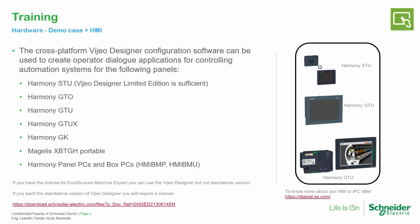You can use Vijeo Designer inside EcoStruxure Machine Expert if you have the professional or standard license, but you cannot use it in the standalone version. If you want the standalone version, you should use a license to program the unit. Here you can find the link for the license, and if you want to know more about our HMIs, you can use this link to get access to more information.